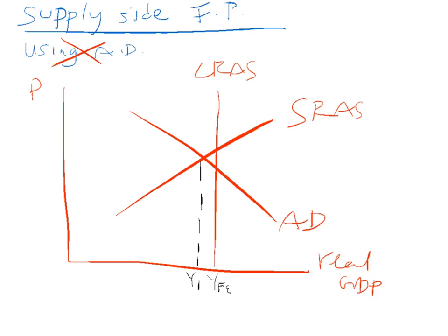They would argue that what you would need to do is increase aggregate supply so we can get to that point, so we can get to equilibrium.